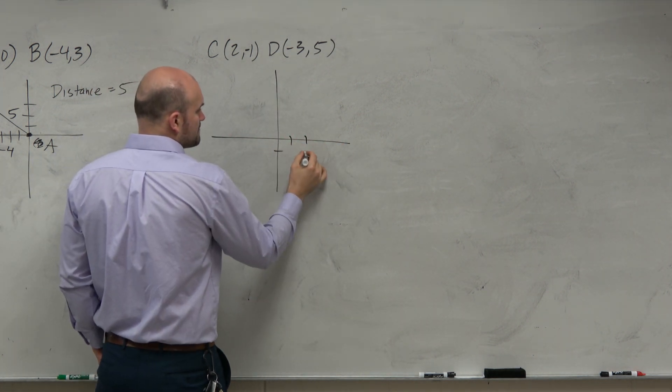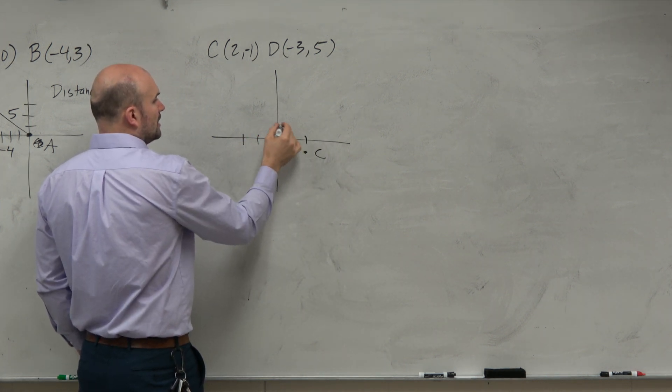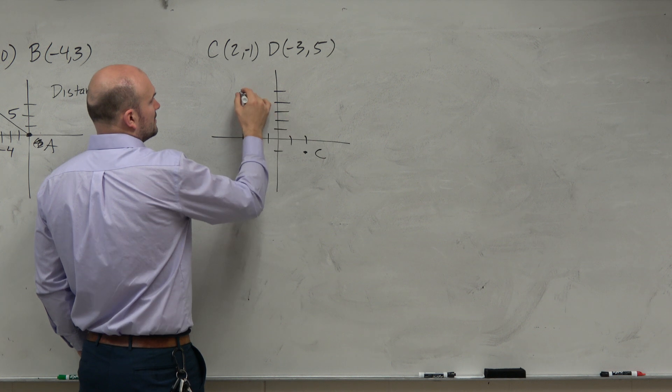So we have 2, negative 1. That's going to be c. And then we have negative 3, 1, 2, 3. 1, 2, 3, 4, 5. That's going to be d.